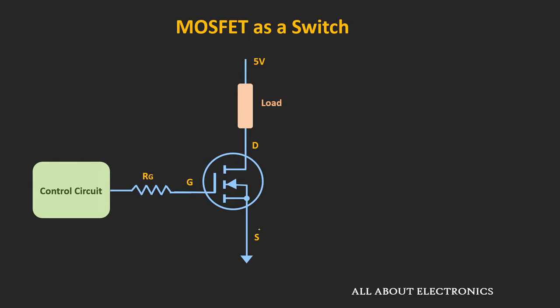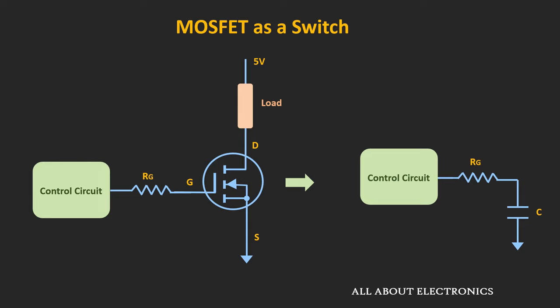The gate-to-source terminal of the MOSFET acts like a capacitor in the equivalent circuit. When we apply the input voltage through the microcontroller pin, this capacitor suddenly tries to charge to the input voltage, and during this transient it can draw a lot of current. If we connect a series resistor, it restricts the transient current. For example, if the MOSFET is controlled using a microcontroller pin with a maximum current supply of 20mA at 5V, then the value of the resistor should be at least 250 Ohm, ensuring the maximum current drawn from the microcontroller pin is less than 20mA.